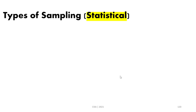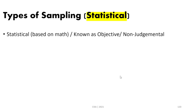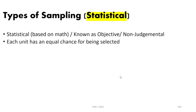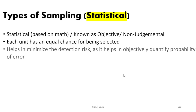In sampling we have many types. The first type is statistical sampling, which is based on math. It is known as objective sampling and is a non-judgmental way — each unit has an equal chance of being selected. Statistical sampling uses the law of probability, so every element in the population has the same chance of being selected. It helps in minimizing the detection risk because it is objective. Whenever you are asked what sampling method helps reduce detection risk, the answer is statistical sampling, also called objective or non-judgmental sampling.